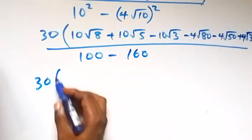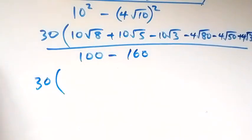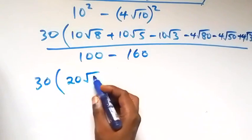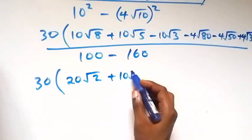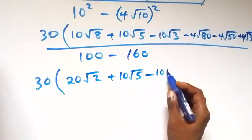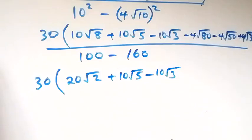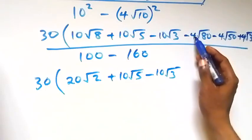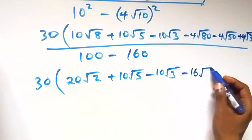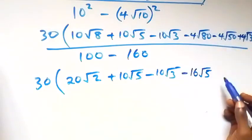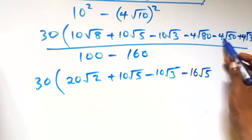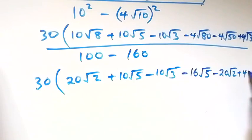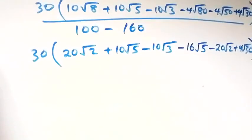Now simplifying: root 8 is the same as 4 times 2, and root 4 is 2, so 2 times 10 gives 20 root 2. Then plus 10 root 5, minus 10 root 3. Root 80 can be written as 16 times 5, and root 16 is 4, so 4 times 4 gives minus 16 root 5. Root 50 can be written as 25 times 2, root 25 is 5, so 5 times 4 gives minus 20 root 2. Then plus 4 root 30. Close bracket, divided by the denominator.